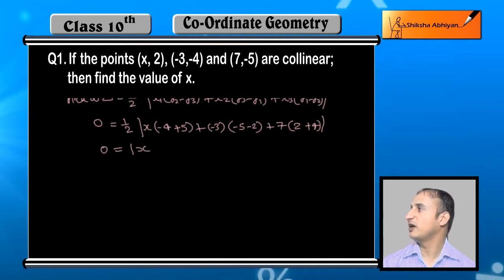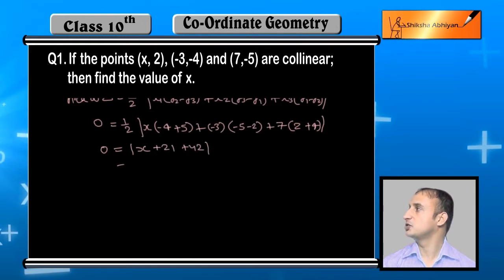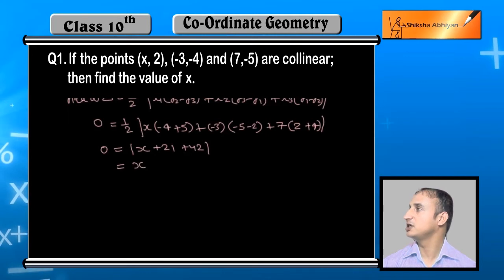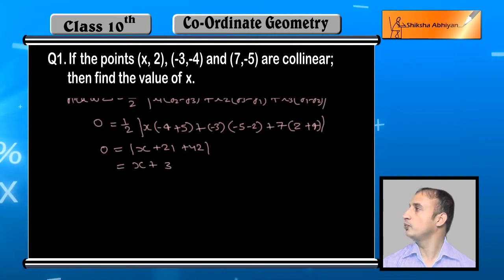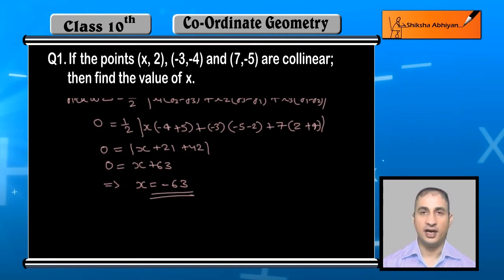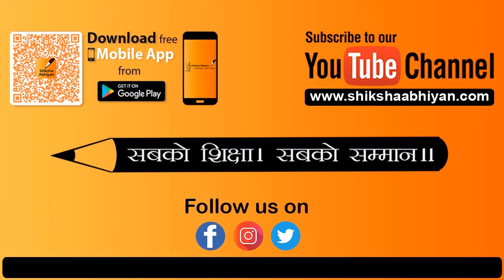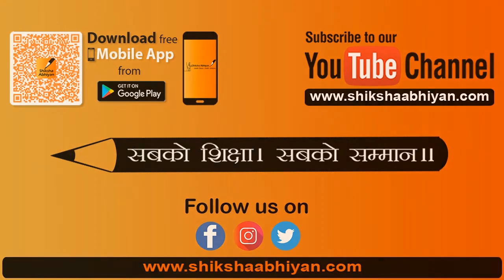Now: x multiplied by minus 5 plus 5 equals 1, so 1 into x is x. Plus minus 5 minus 2 is minus 7, and minus 7 into minus 3 is plus 21. Then 2 plus 4 is 6, and 6 into 7 is 42. Now 21 plus 42 is 63, so x is equal to minus 63. This is the answer.